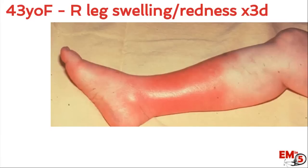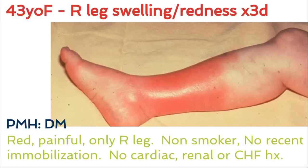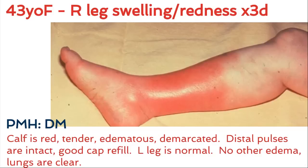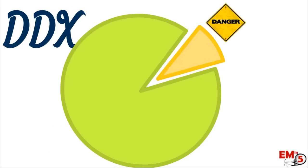Let's say we have a 43-year-old female who comes in with right lower extremity pain and redness for the last three days. She has a history of diabetes. On exam and history, the right leg is pretty painful and red. She's not a smoker, has no recent immobilizations, no history of blood clots, and no cardiac or renal history. On exam, the calf is pretty tender and red but very well demarcated, with great distal pulses, good cap refill, and no other findings.